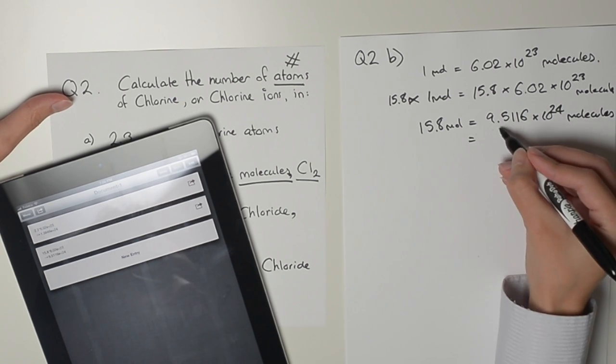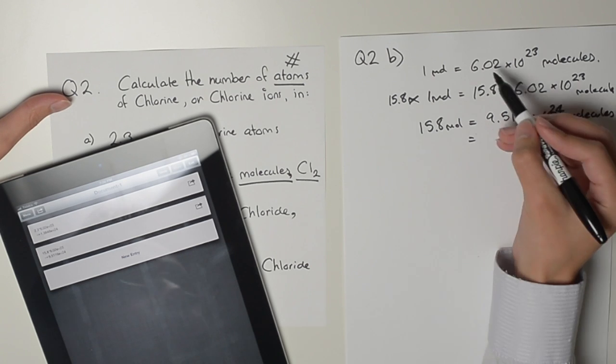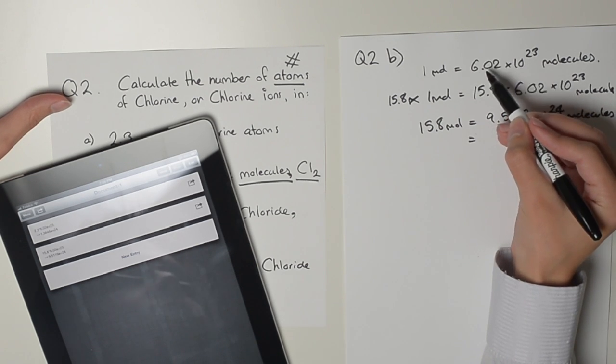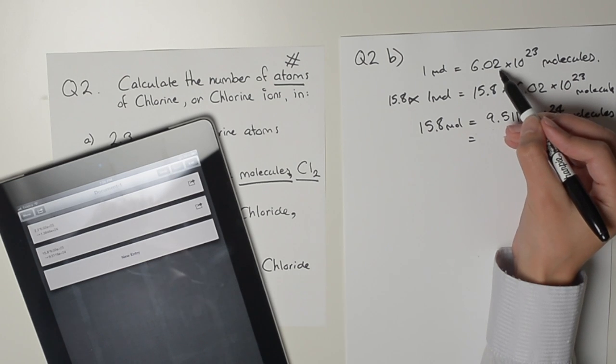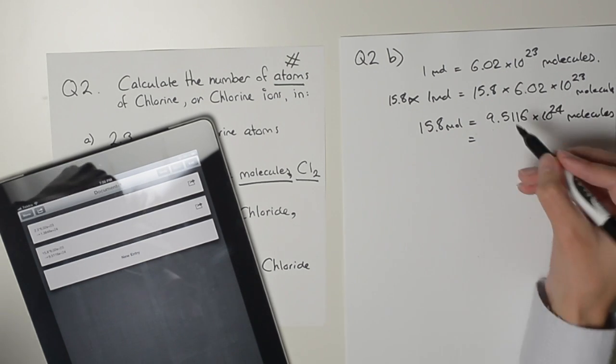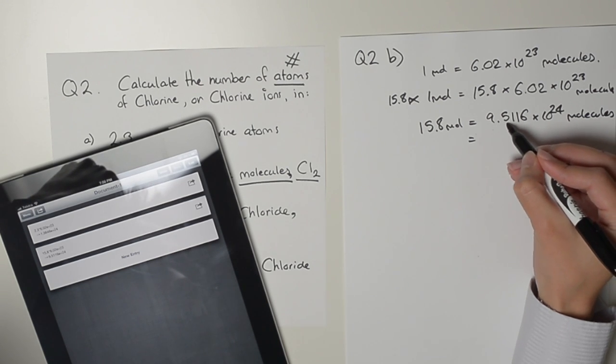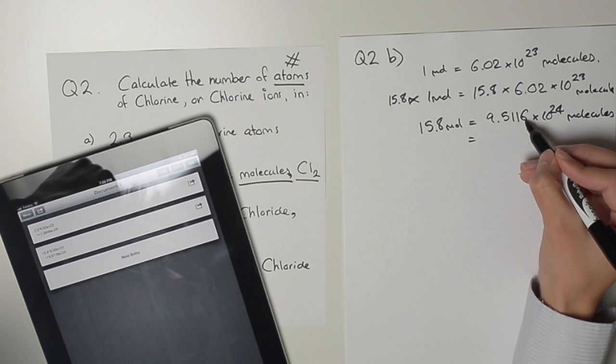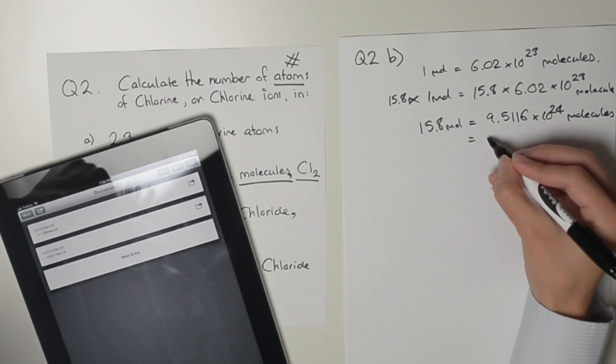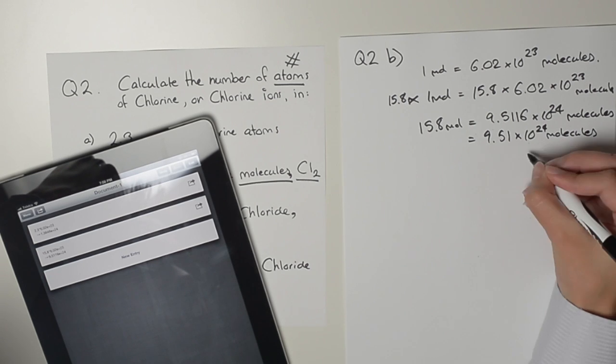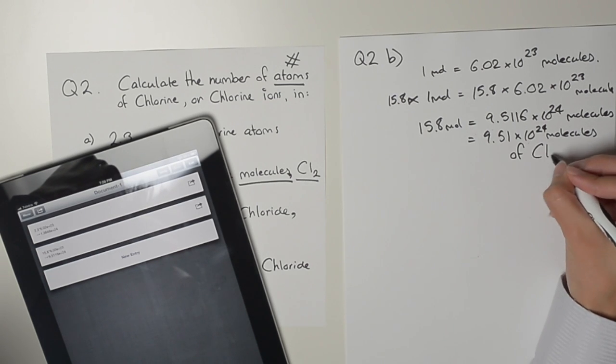Remember that significant figures have to stay the same. We've got 3 significant figures here, so we need the same. I need to round to get 3 significant figures. The 6 and the 1 won't round up the rest, so it's 9.51 times 10 to the 24 molecules of chlorine.